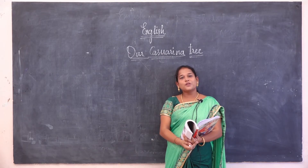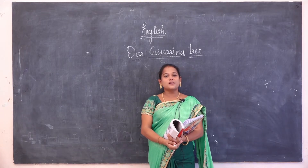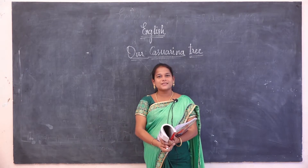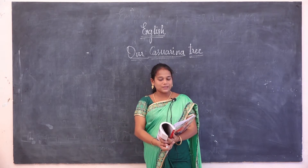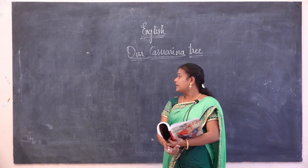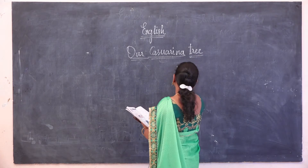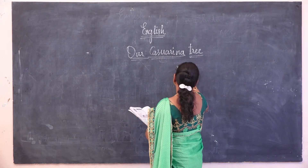Good morning to all. Today we are going to learn a second poem of 12th standard, 'Our Casuarina Tree' written by Toru Dutt.